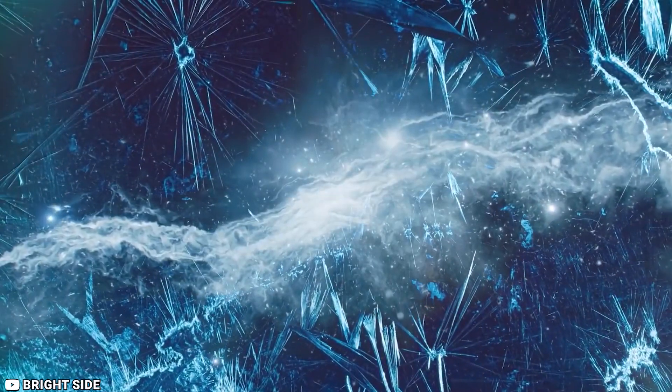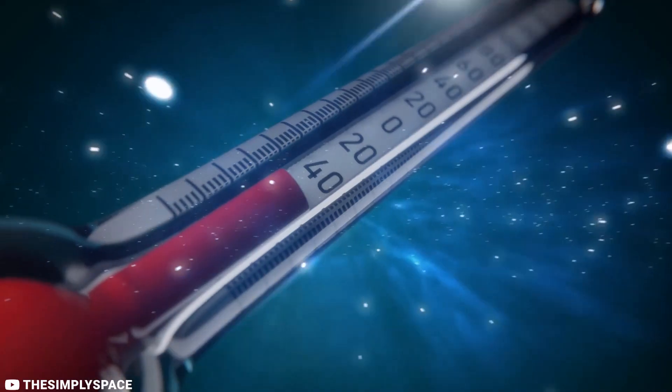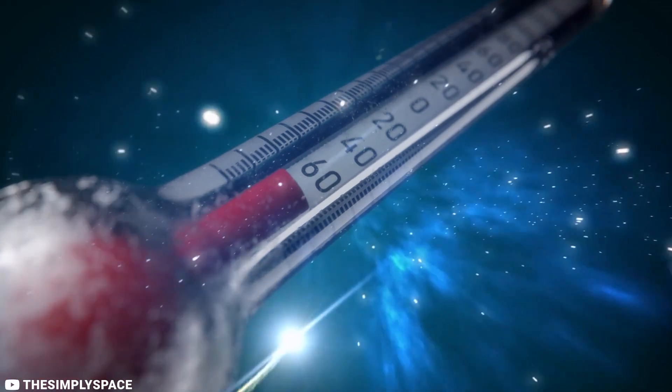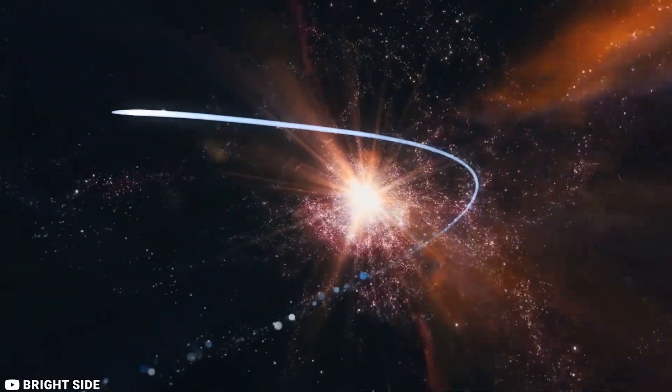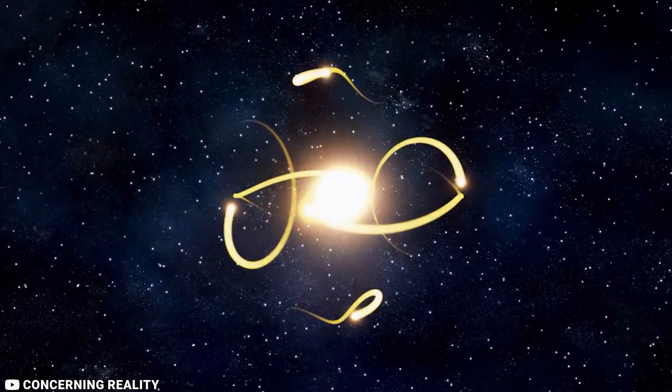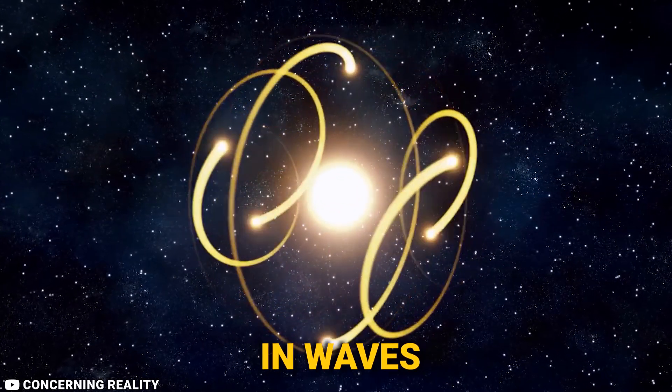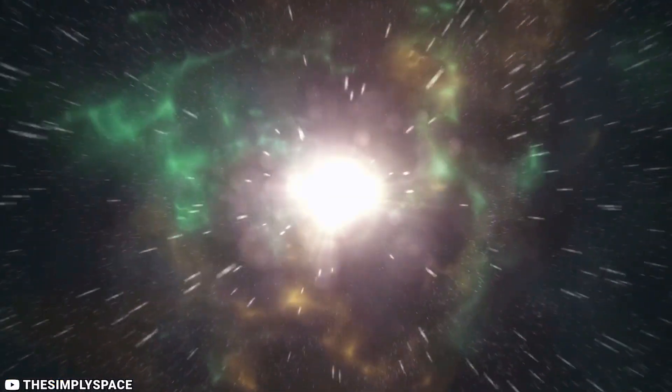There are a few reasons why space is so cold. First, there is very little matter in space. This means that there are very few particles to collide with and transfer heat. Second, the only way for heat to travel through space is through radiation. Radiation is a form of energy that travels through space in waves. Radiation is very slow to travel, and it can easily be blocked by matter.